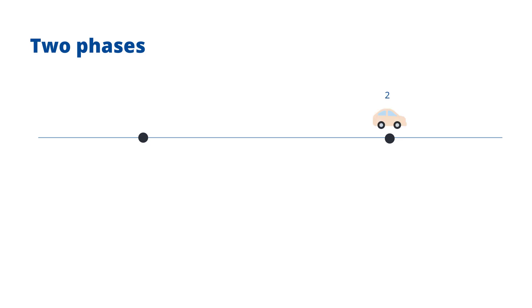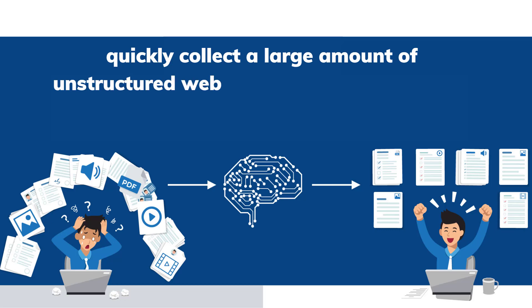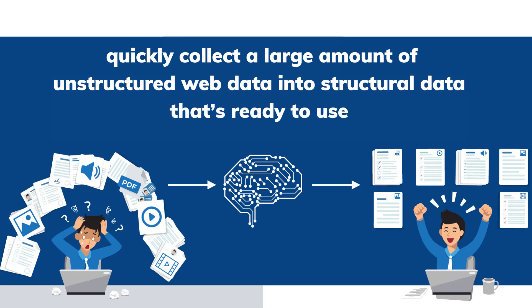In the second phase, as the Internet gradually grew into the world's largest database, and with people starting to realize how to make use of the valuable data obtained from the web and actually monetize it, web scraping became a popular way to quickly collect large amounts of unstructured web data into structured data that's ready to use.